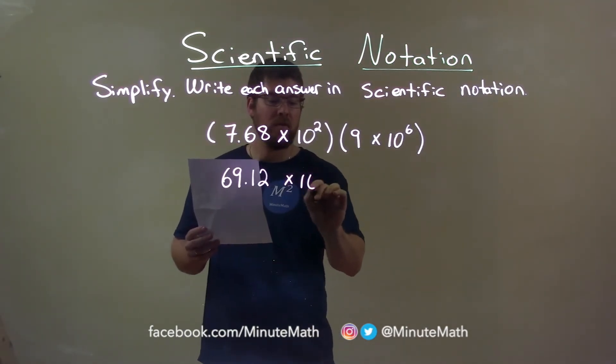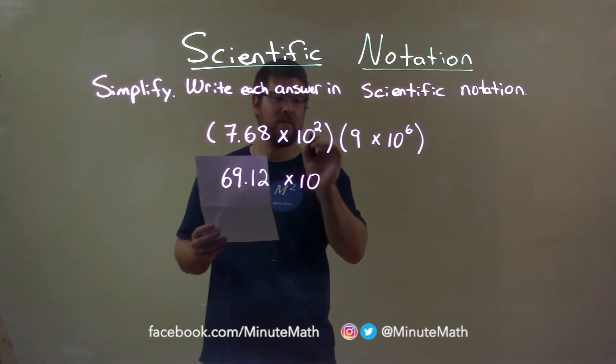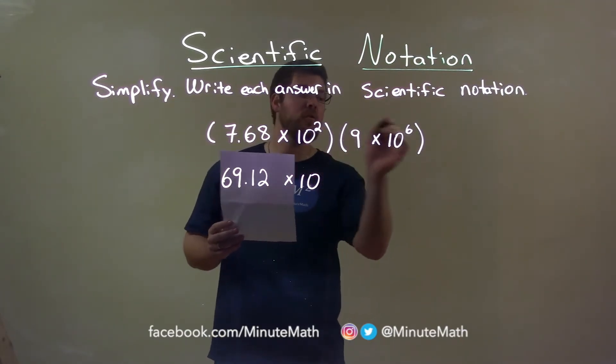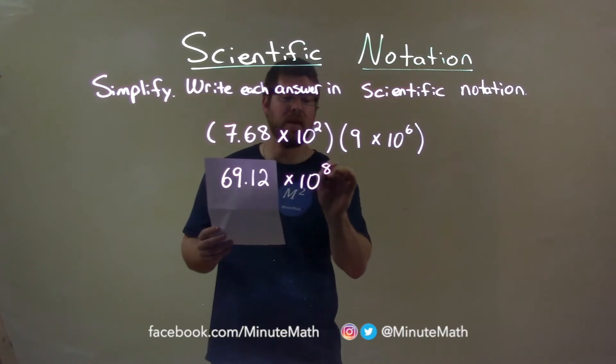Now, I can multiply the 10s. They have the same base, so all we have to do is add the exponents. 10 squared times 10 to the 6th, same thing, 2 plus 6 is 8, 10 to the 8th power.